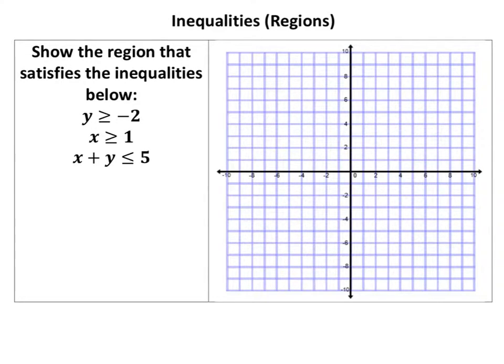We're looking at inequalities and regions from inequalities, and we've got three inequalities here. We're going to draw three lines. We're going to draw the y equals negative two line from the top inequality, the x equals one line from the second inequality, and the x plus y equals five line from the third inequality.